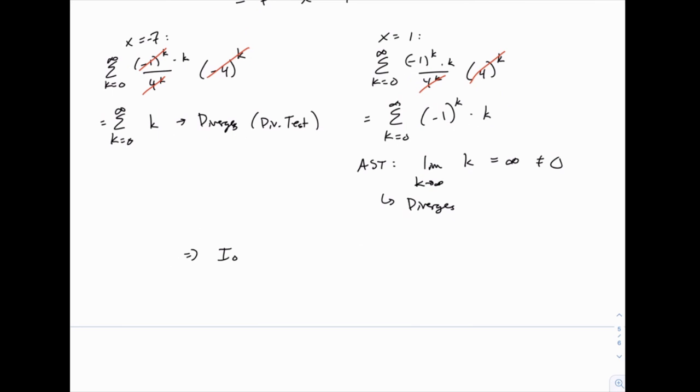So the interval of convergence does not include either endpoint. So therefore, the interval of convergence is simply the interval from negative 7 to 1 exclusive of either one. Or you could say this in inequality notation. So there's our interval of convergence. And again, it's centered at negative 3, just like we expected from the very beginning.